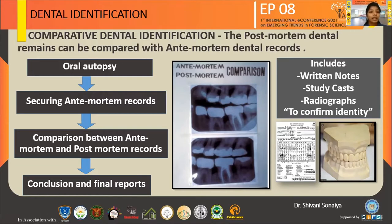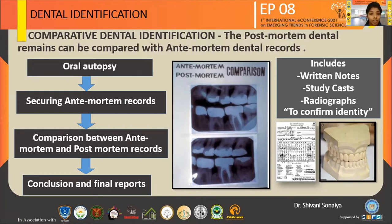The steps of comparative dental identification are: the first step is oral autopsy, which helps to make a proper post-mortem dental record. An incision is done along the angle of the mandible to the tragus of the ear. Sectioning of the muscles and ligaments of the temporomandibular joint is done, traction of the mouth is done, and visualization of the upper and lower dental arches is completed.